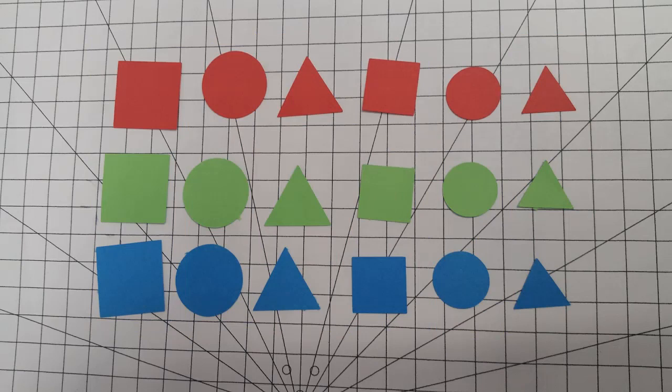Or we could categorize them by color: red shapes in one group, green in another group, and blue in another group. Or we could categorize them by size: large objects in one group and the small objects in a different group.